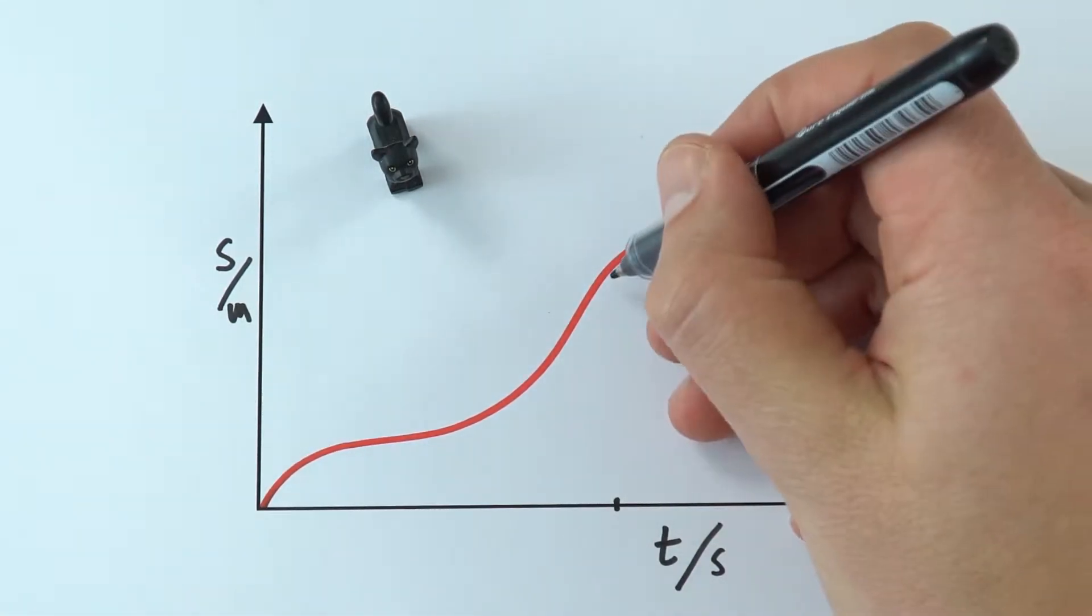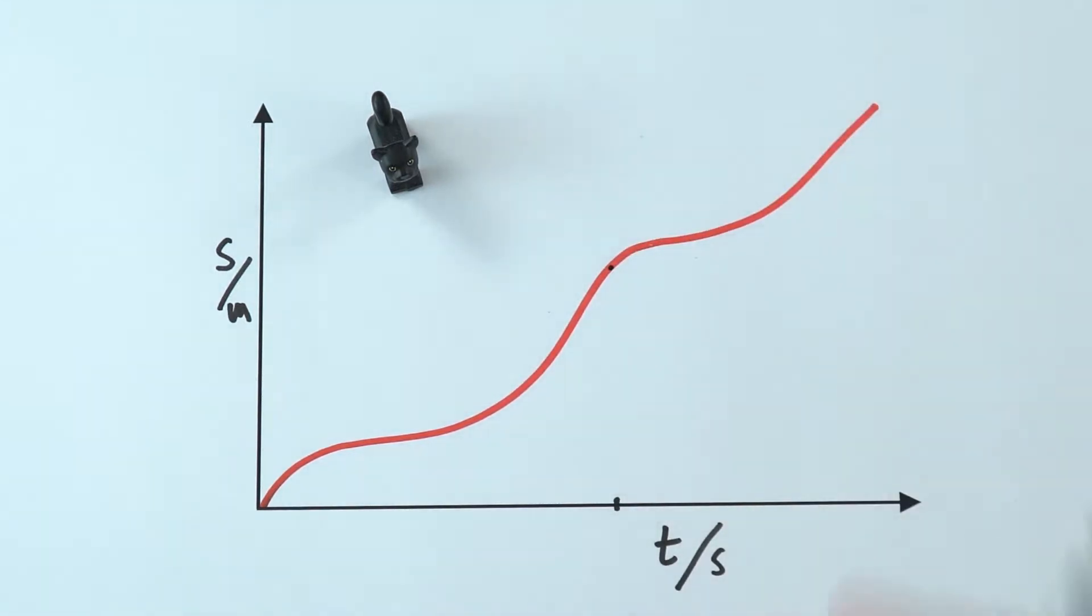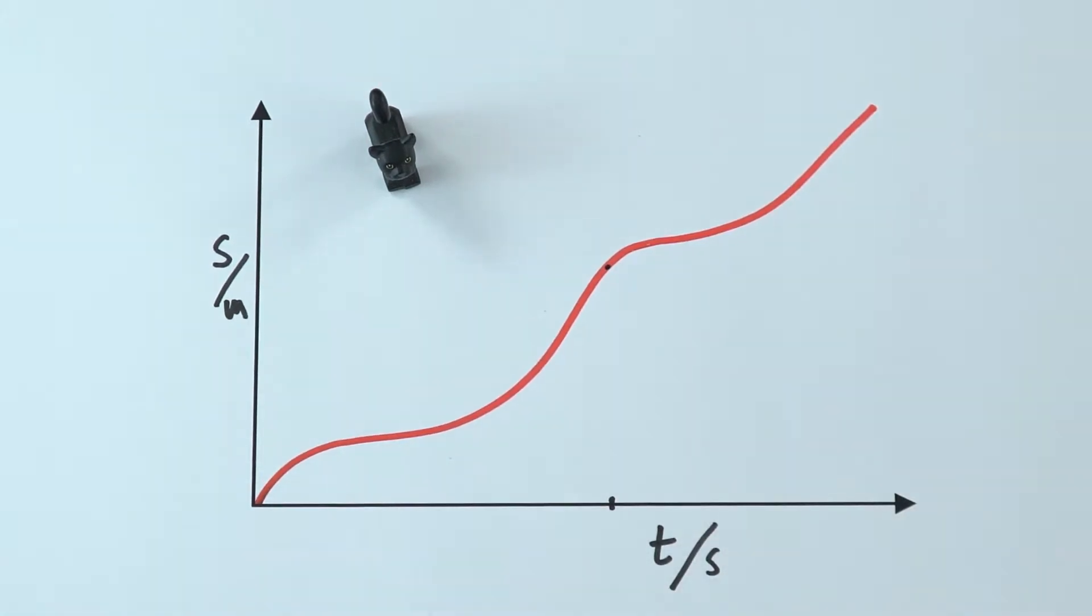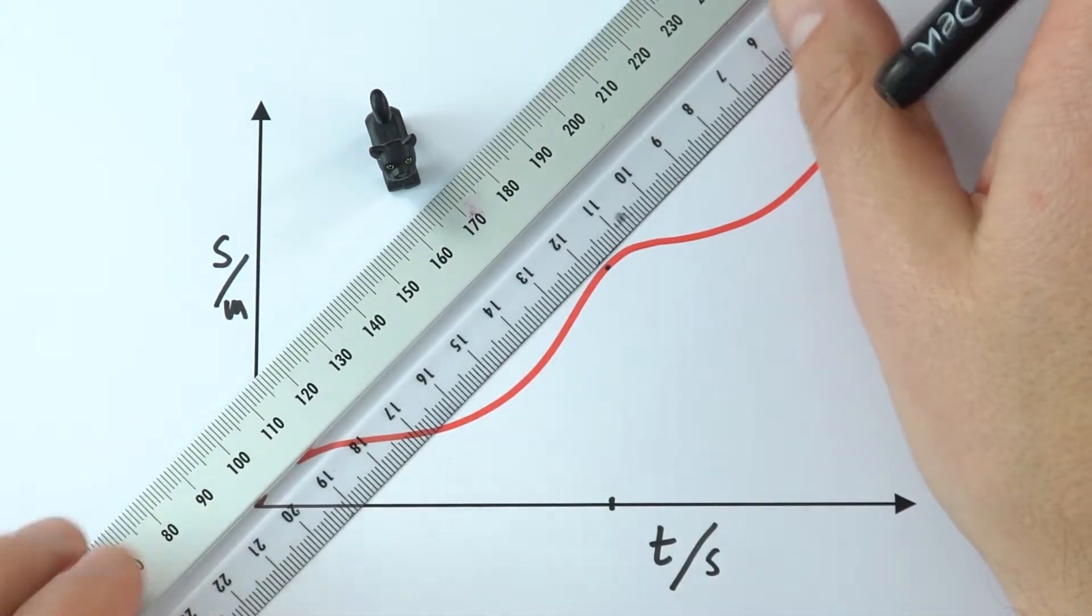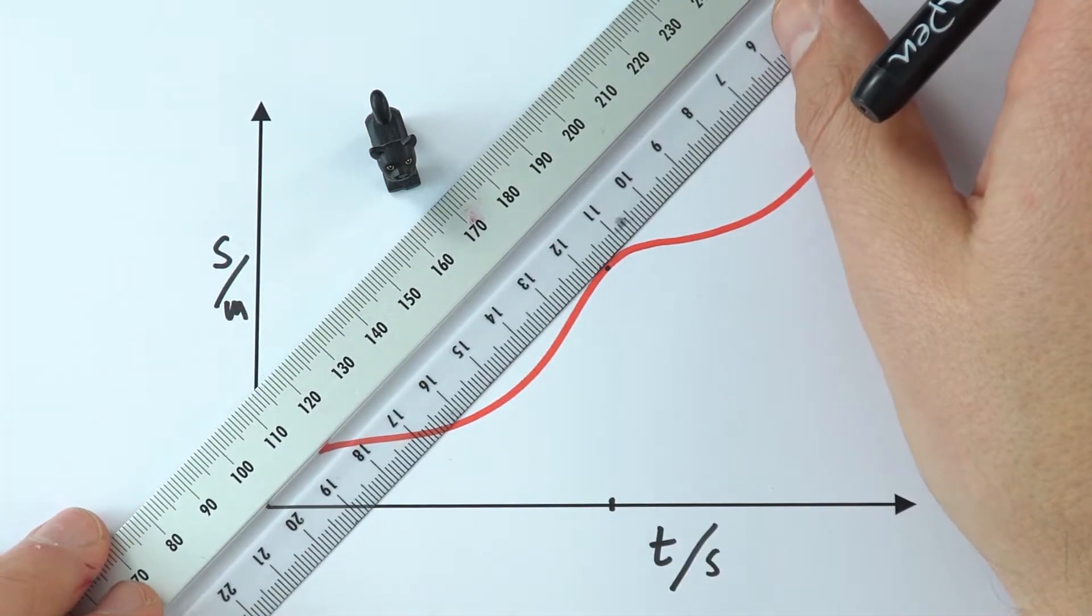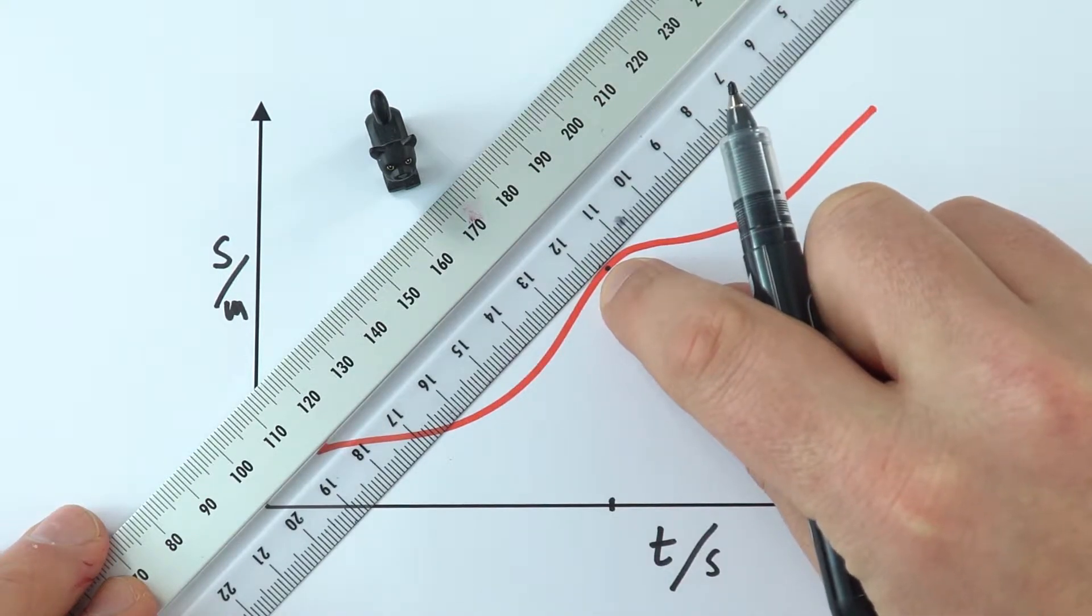So to work this out, what we want to do is work at the gradient of this part here. But it's something that we can't work out directly. So instead, what we need to do is take a ruler and we then need to draw a tangent to the curve. So this is the kind of thing you might have done in mathematics. This is very much a straight line that just meets that curve at the same point.